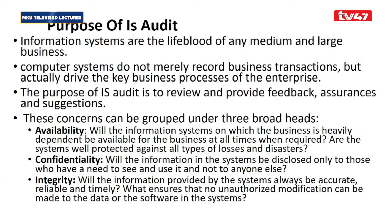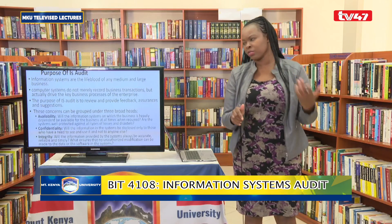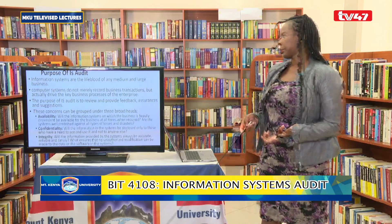The second concern is confidentiality: information within the system should be disclosed only to those who need to see and use it. As you do IS auditing, you check whether those systems are ensuring confidentiality. When it comes to database access, we have user rights — a user is only allowed to view, modify, or edit the data that concerns them.